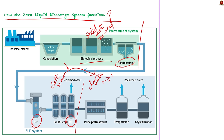The by-product of the filtration process is a sludge or brine, which is a liquid with a high amount of dissolved salts. This concentrated brine or solution produced from the filtration process is further treated through evaporation and crystallization. By evaporating the water content, solids and salts are separated, forming crystals that can be collected and disposed of properly. The evaporated water is then condensed and can be reused.